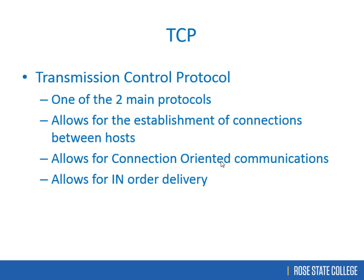TCP uses 32-bit sequence numbers — a very large randomly selected number. Every time a packet is sent, the sequence number increments by one, and the receiver sends back an acknowledgement number. This way, if packets arrive out of order, they can be reassembled correctly.